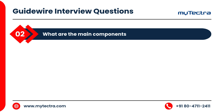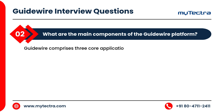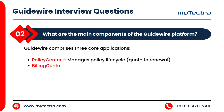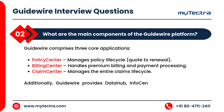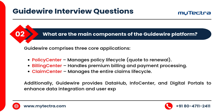What are the main components of the Guidewire platform? Guidewire comprises three core applications: Policy Center manages policy lifecycle, quote to renewal; Billing Center handles premium billing and payment processing; Claim Center manages the entire claims lifecycle. Additionally, Guidewire provides Data Hub, Info Center, and digital portals to enhance data integration and user experience.